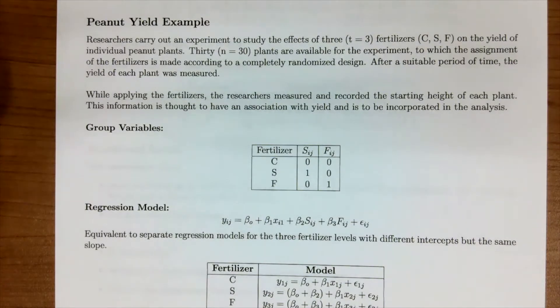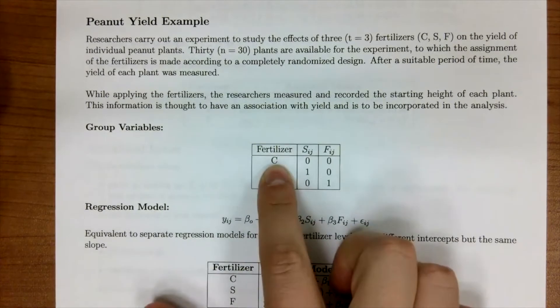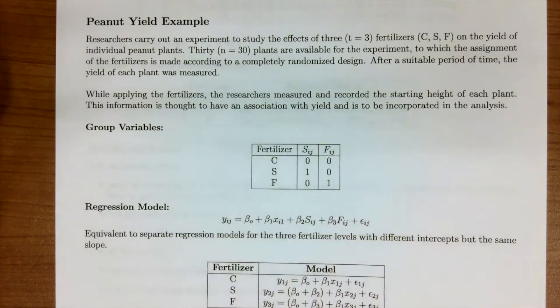So since we have three treatments, we're going to need two group or dummy variables to represent our treatment. We're going to let S-I-J and F-I-J represent whether we're in a specific fertilizer group. So S and F here. With this formula, we're setting C as our reference group and so everything is going to refer back to our fertilizer C. Hopefully that'll make a little bit more sense as we keep going through these notes.